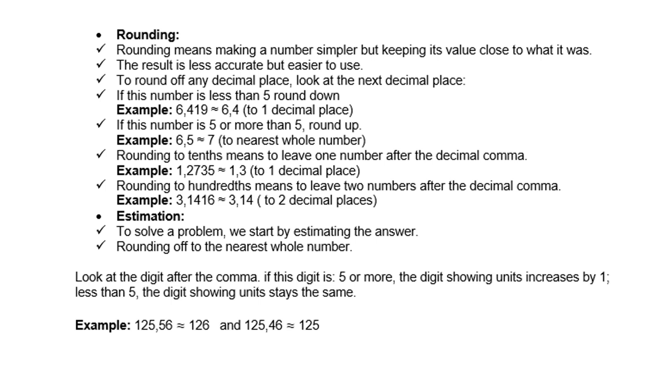Rounding to tenths means to leave one number after the decimal comma. Example: 1,2735, because the 7 is bigger than 5, so we round up to 1,3.